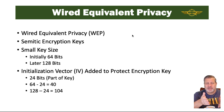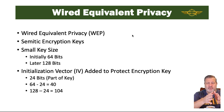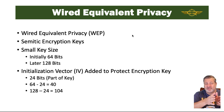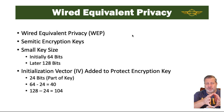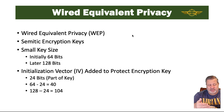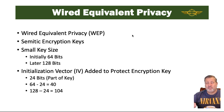In 1999, the 64-bit requirement meant that with the 24-bit IV included, your encryption key could only be 40 bits. Even when increased to 128 bits, your key size could be only 104 bits. Even with that, it wasn't quite strong enough the way WEP was designed.